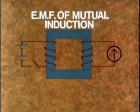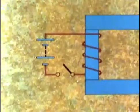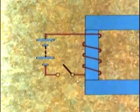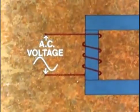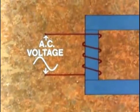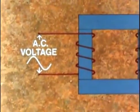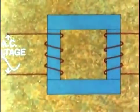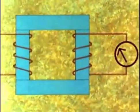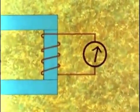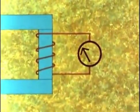This is the EMF of mutual induction. It must have struck you that if instead of switching on and off the current, we supply an alternating voltage to the first coil. So that its field changes continuously, we shall induce an alternating current in the other coil. And this is how a transformer is constructed.